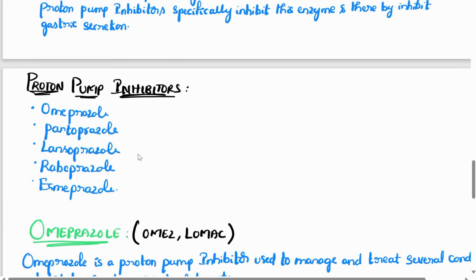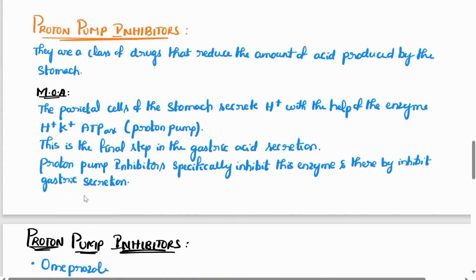Examples of proton pump inhibitors are omeprazole, pantoprazole, lansoprazole, rabeprazole, and esomeprazole. These are the key drugs in the proton pump inhibitor class.